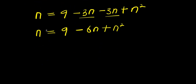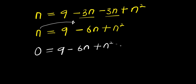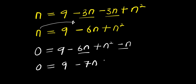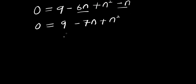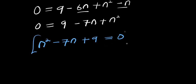From here I can easily move this n over to the other side. This gives 0 equals 9 minus 6n minus n, which is minus 7n, plus n squared. So from here I have n squared minus 7n plus 9 equals 0, and we have this quadratic equation.